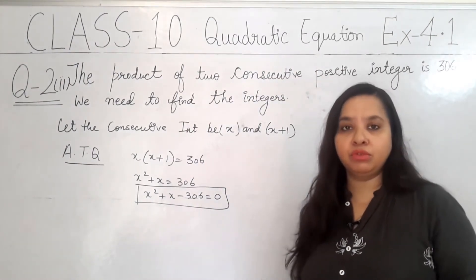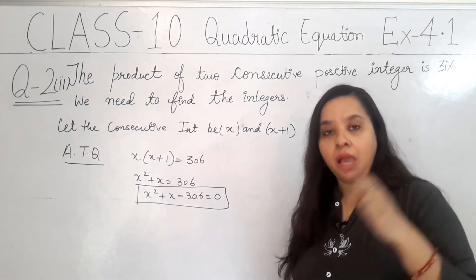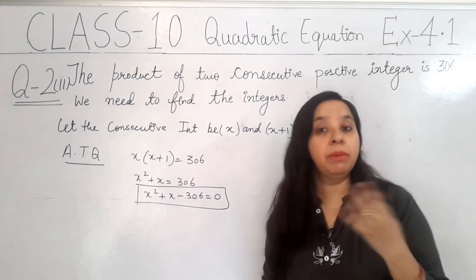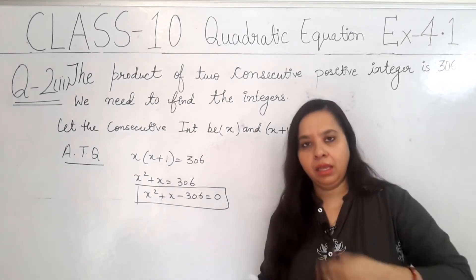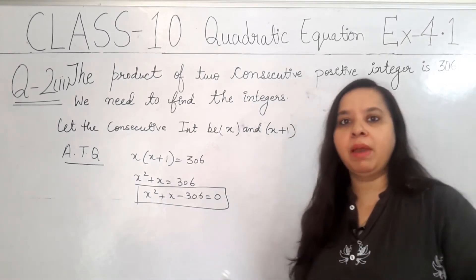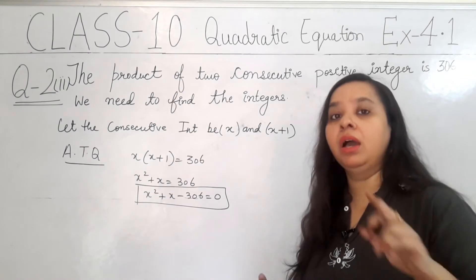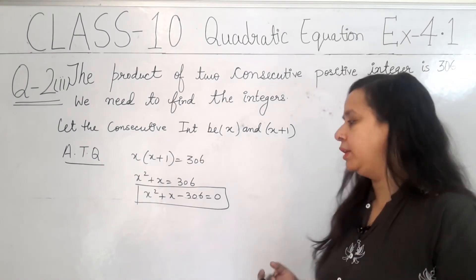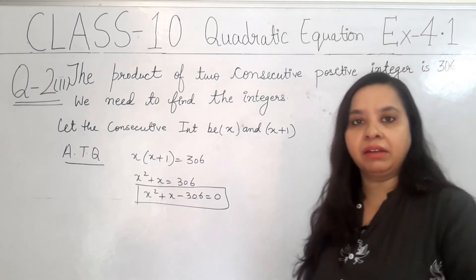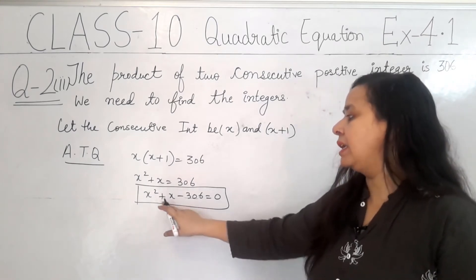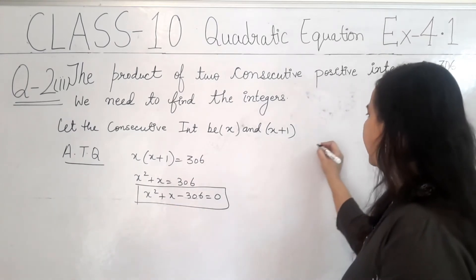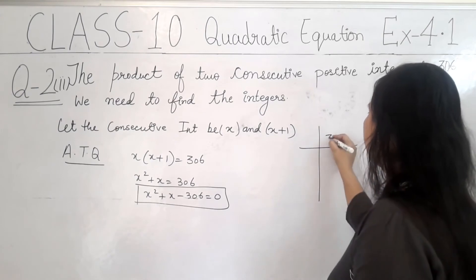We have multiple methods to solve the quadratic equation. But, for this exercise, you can use only mid-term split. So, I have not explained the rest of the other methods. So, in the coming videos, I will explain the quadratic formula and the completing square method. So, we will look at the factors of 306.